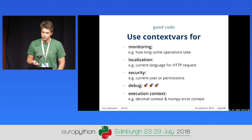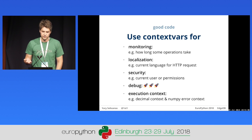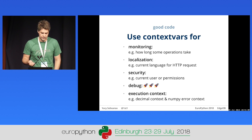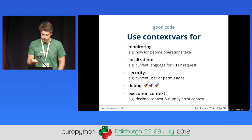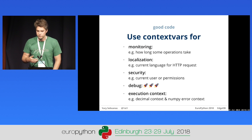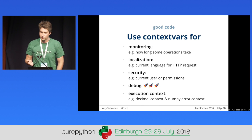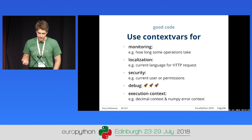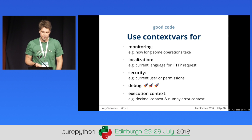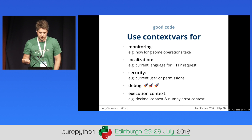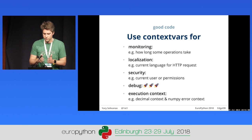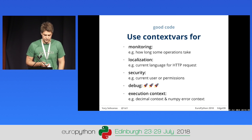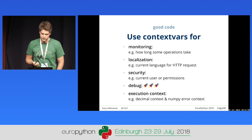You can use context variables for monitoring, profiling, and tracing. You can use them for localization — knowing whether the current user speaks English or German. For security — storing the current user ID or security capabilities accessible from anywhere in your application. For debugging — creating a temporary context variable to check if things are connected. And for storing execution context, such as decimal context or NumPy error context, so those work correctly in async/await.